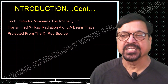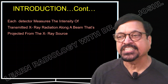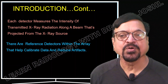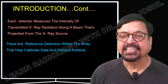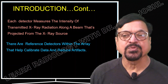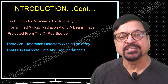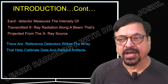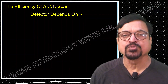Each detector measures the intensity of the transmitted X-ray radiation along the beam projected from the X-ray source. In addition to the main detectors, there are also reference detectors within the array. They are positioned next to the routine detectors and serve two roles: they help calibrate the data and they reduce artifacts — both important contributions to image quality.